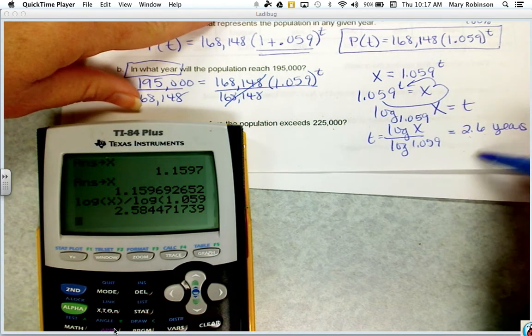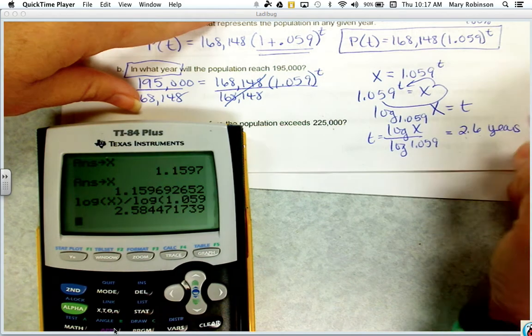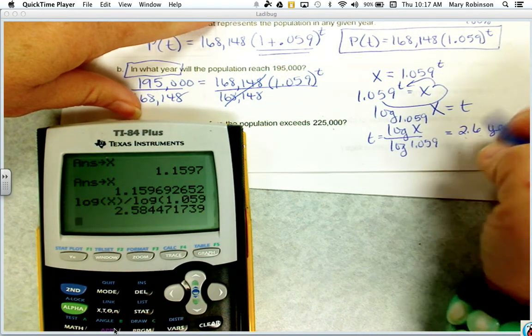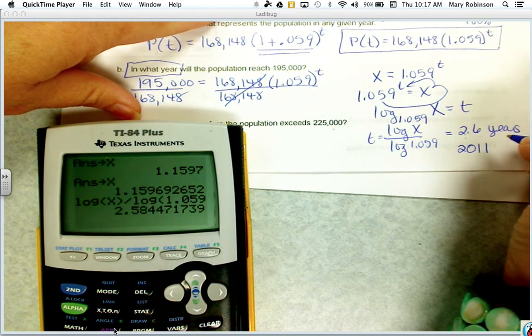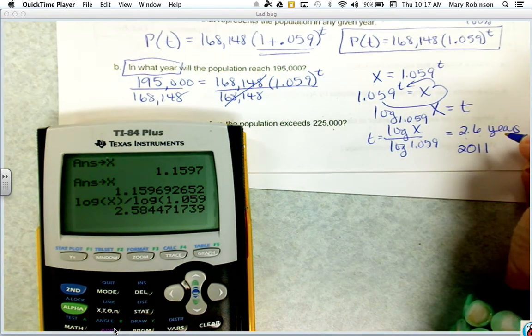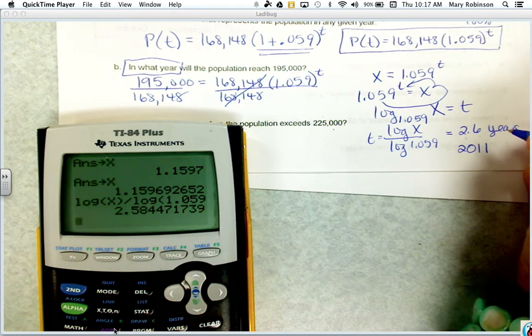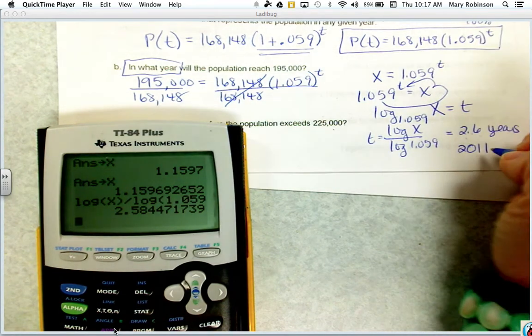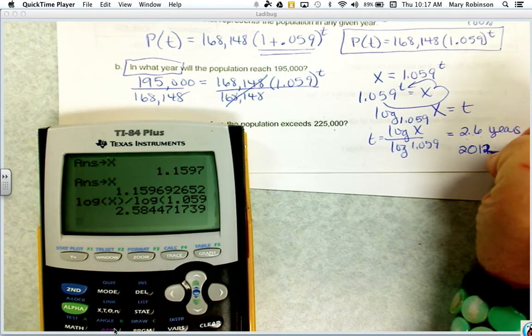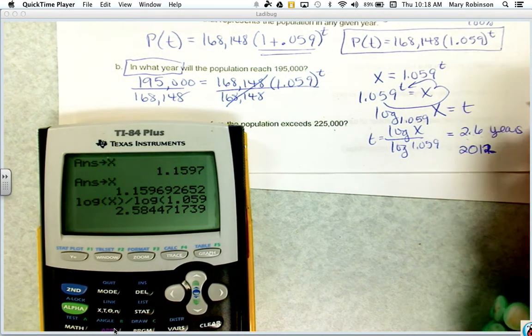2011, 2012, it's going to be in the middle of 2011, 2012. So it will occur in the year 2012. So please just be cautious. 2.6, 10, 11, 12. I'm sorry, 2012. Please do not round that to 3 years and make it 2013.